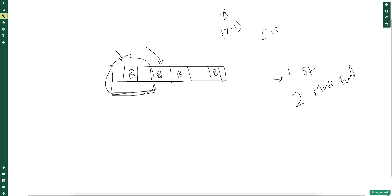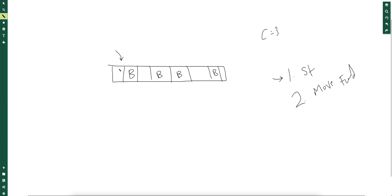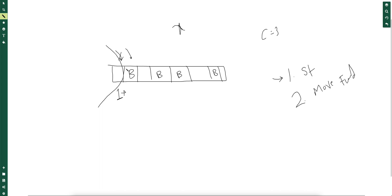We have reduced our problem wherein we reduced both the array size and the number of carpets available. This is a recursive solution — we ask the same question again: whether to start a carpet from here or move forward. If we haven't started a carpet and moved forward, it contributes one to our final answer because we decided not to cover this white cell. We haven't reduced our carpet count, but we have reduced the array size — the original problem is reduced to a subproblem.